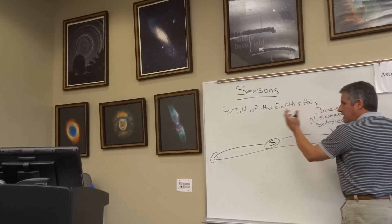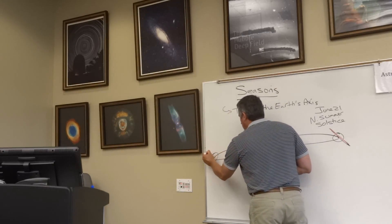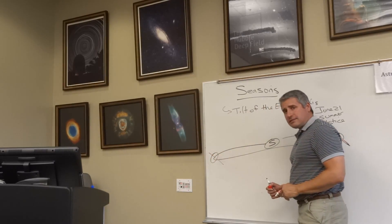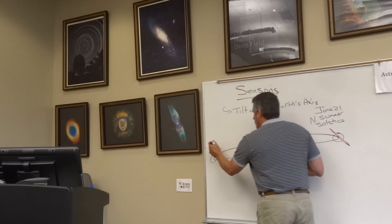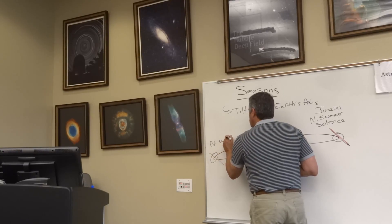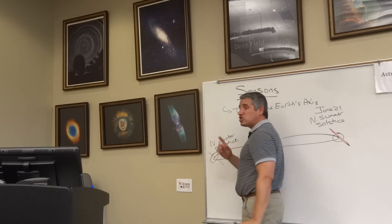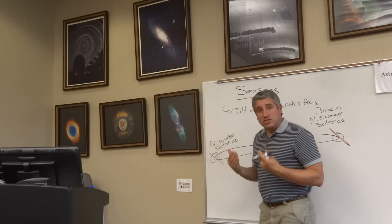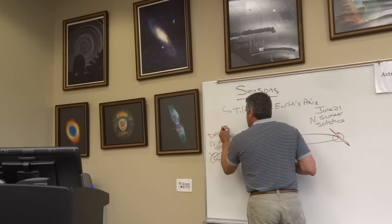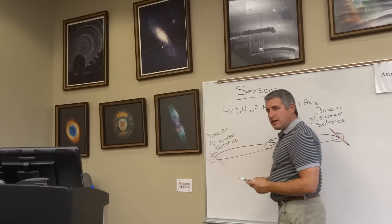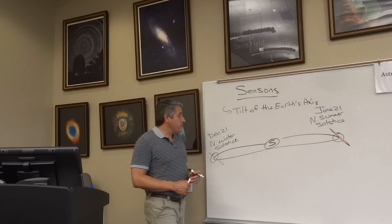Moving on to the other extreme — the Earth's axis is tilted 23.5 degrees away from the sun. That means this is northern winter, which represents the winter solstice. Look at the word solstice — 'sol,' like solar. The winter solstice takes place on December 21st, and that is the shortest day of the year for folks in the northern hemisphere. It's the longest day of the year for people in the southern hemisphere.